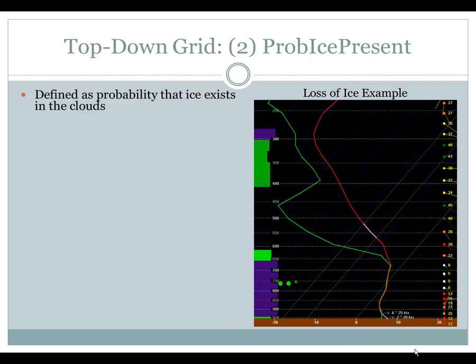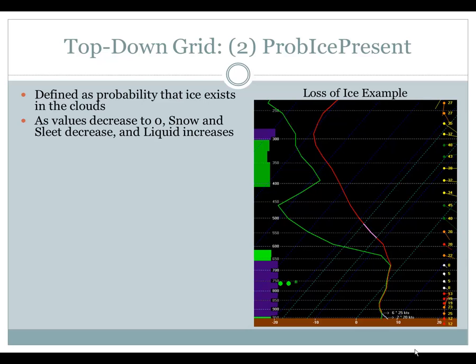The next top-down grid we will discuss is the probability of ice present. This is defined as the probability that ice exists in the clouds. As the values for this grid decrease to zero, you will see the probabilities of snow and sleet decrease, and the liquid ones increase, like rain and freezing rain. Caution: loss of ice can also mean precipitation is ending, so be very careful in applying this grid to your forecast.